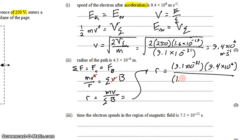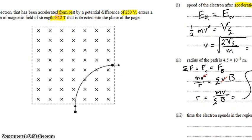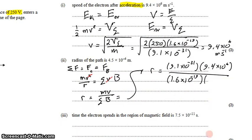divided by the charge of an electron, 1.6 times 10 to the negative 19th coulombs, and the magnetic field strength of this particular magnetic field, which is 0.12 tesla.